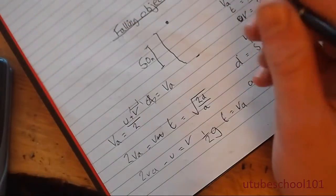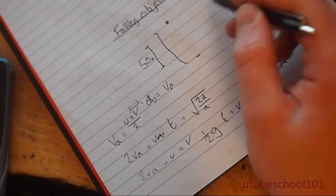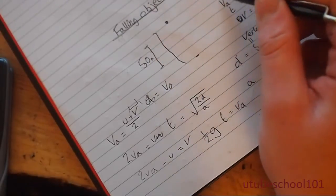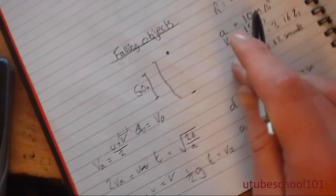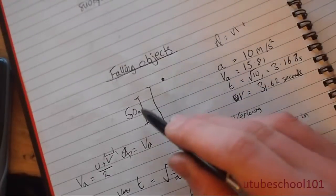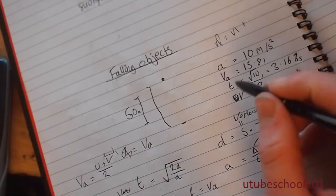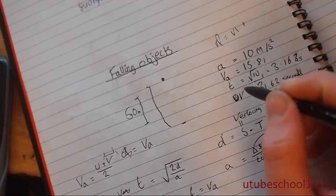So just to conclude, by only having the distance and the force of gravity, I can work out the average speed, the time it took, and the final velocity.